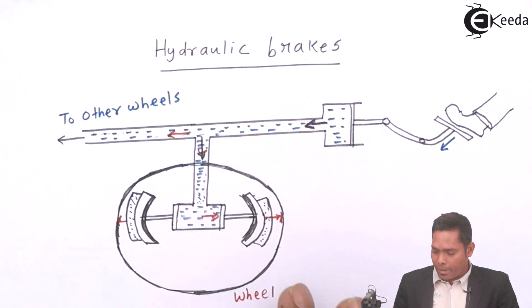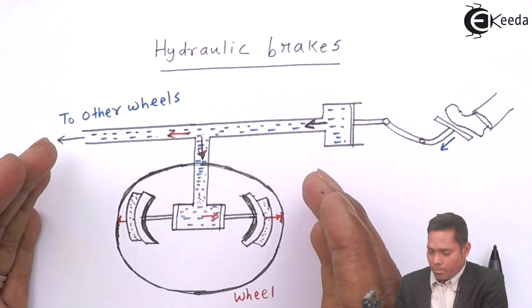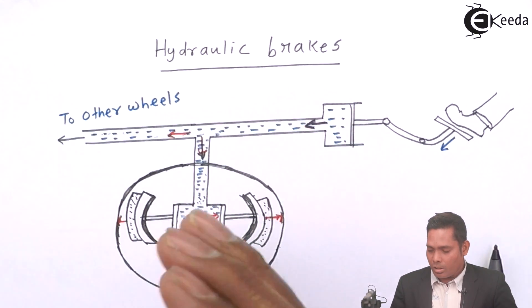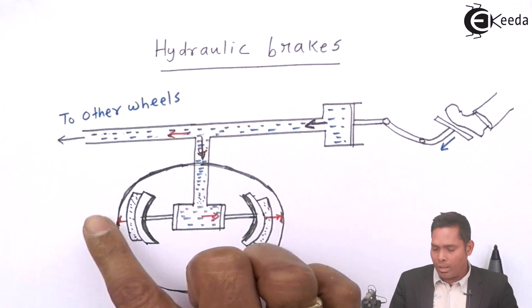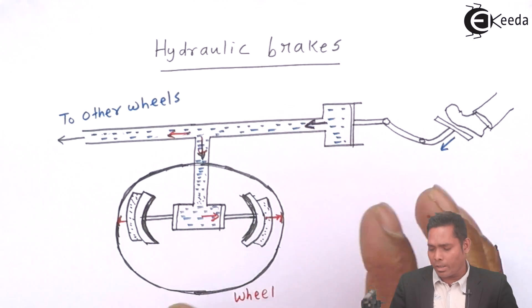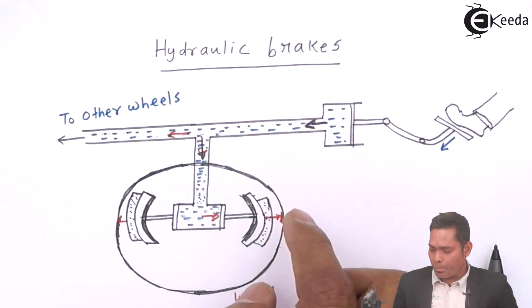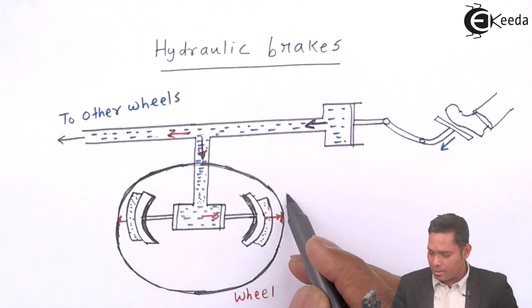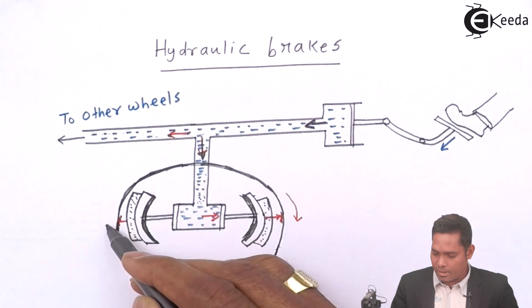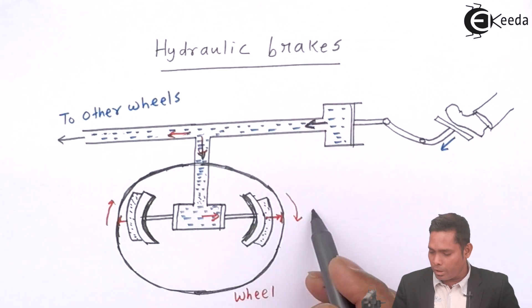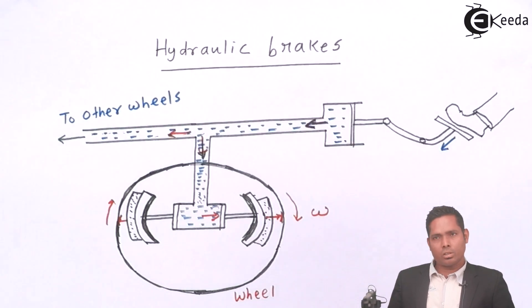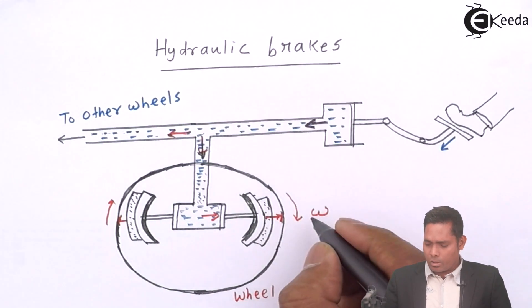So by doing, by moving towards the rims of the wheel and creates friction and try to reduce the motion. Suppose the wheel is rotating like this, rotating like this, by pressing it the speed or the angular velocity of this wheel will decrease.